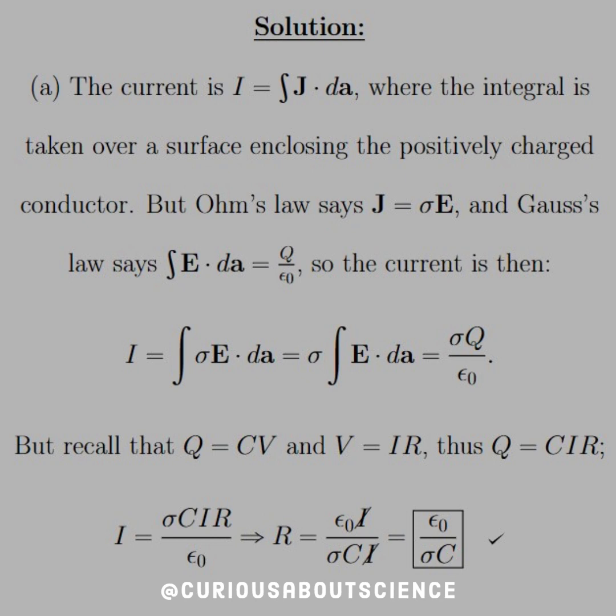the solution is that the current is equal to the integral of J with respect to the surface area or the area element that it's crossing through. So we're going to say that the surface is enclosing a positively charged conductor. But then Ohm's law says that J is also equal to sigma E, and Gauss's law says that the integral E dot dA is equal to Q over epsilon-not.